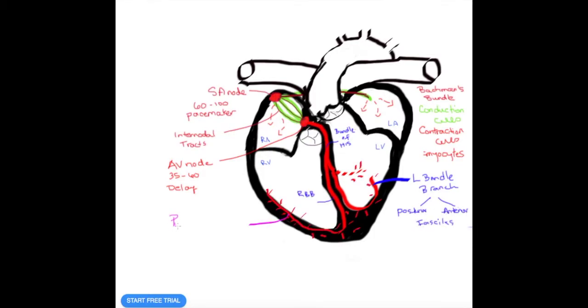The Purkinje fibers also have an intrinsic firing rate of 15 to 40 beats per minute. But the reason we don't see the AV node and the Purkinje fibers driving the heart rate is because the SA node drives it faster.